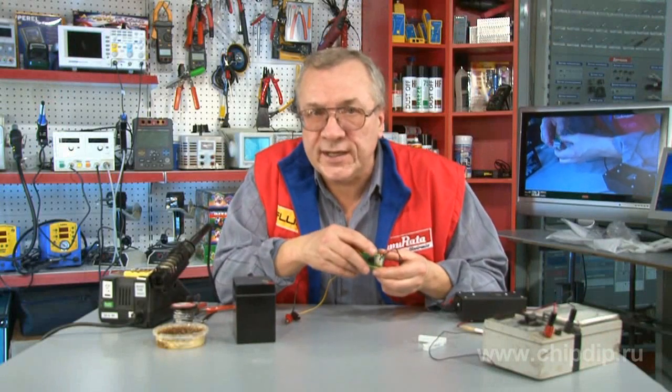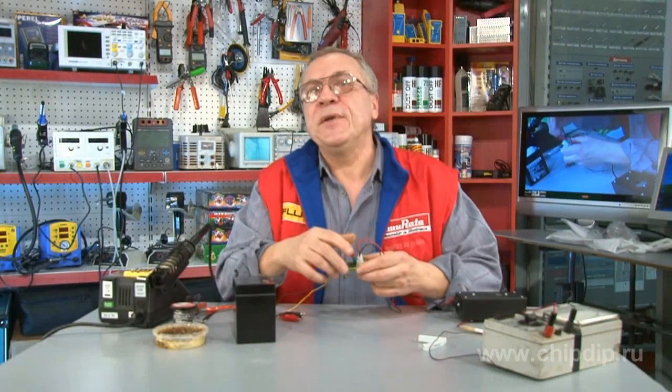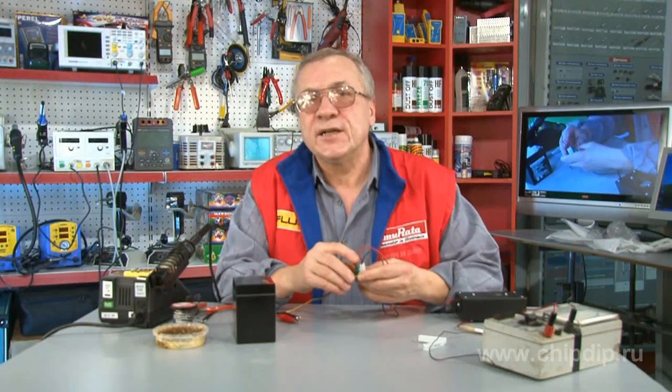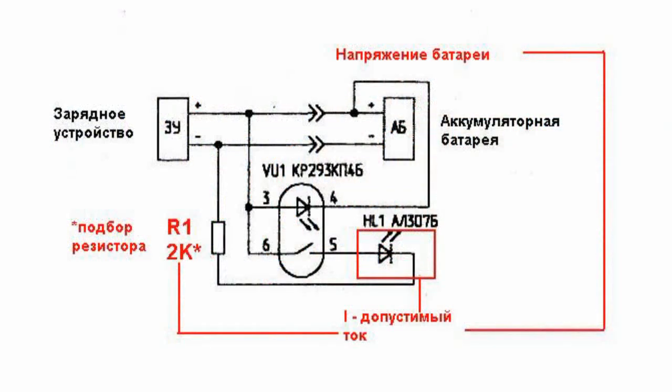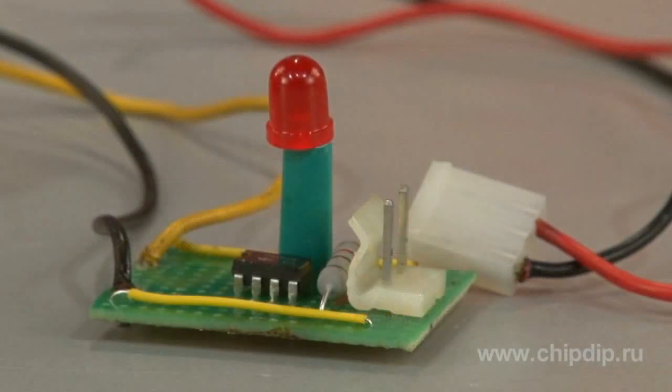Thus the LED glow signals the charge current, and as the charge increases, the glow gradually disappears. The R1 resistor is selected depending on the voltage of the connected battery in order to set the current flowing through the LED indicator.